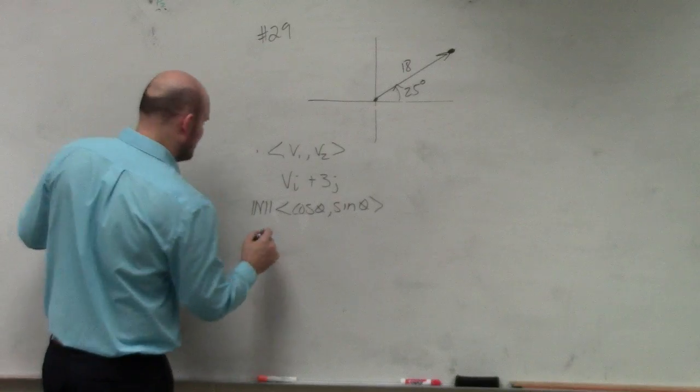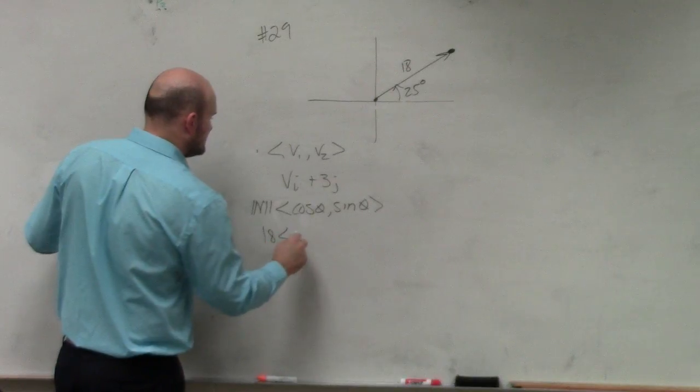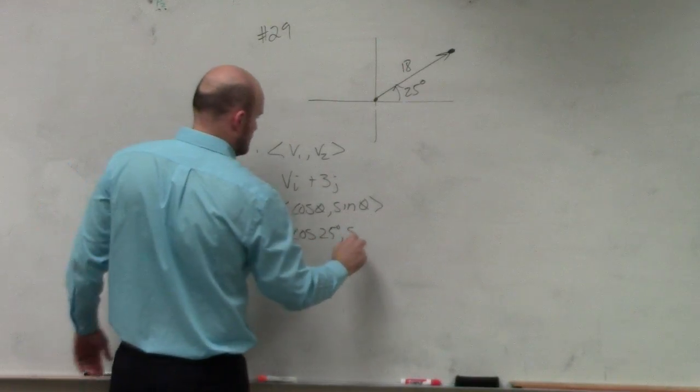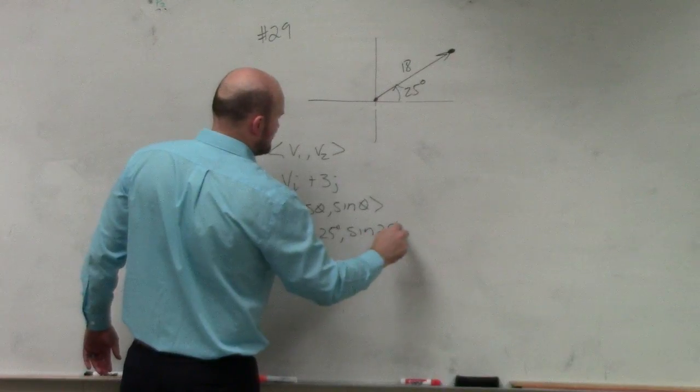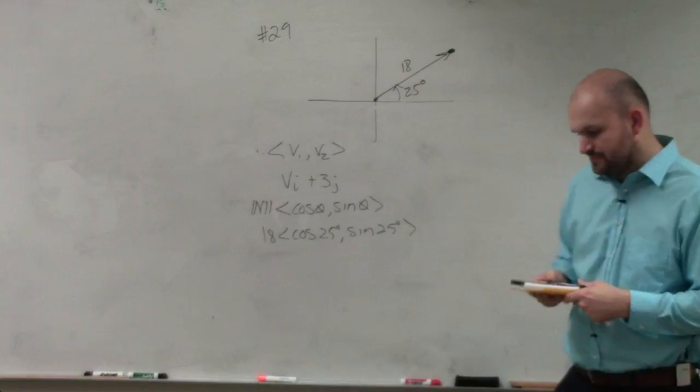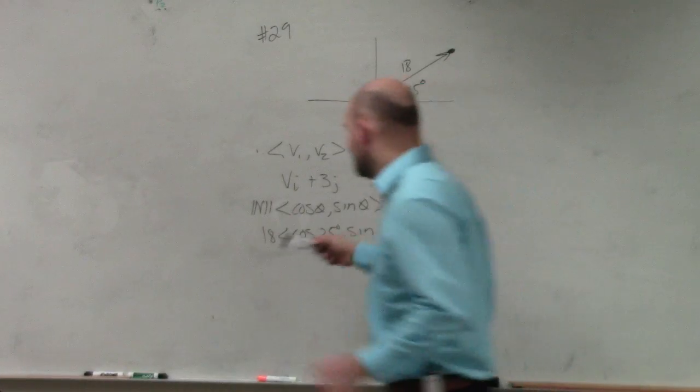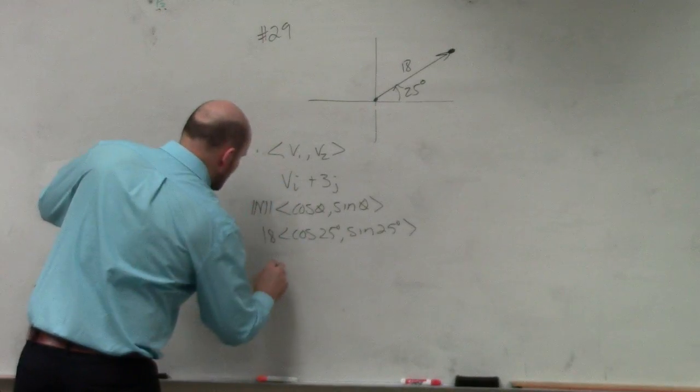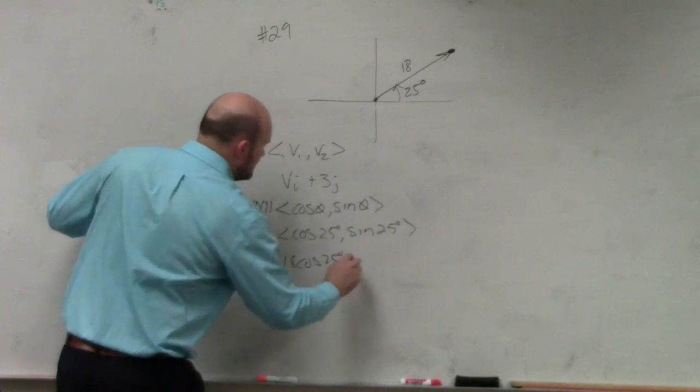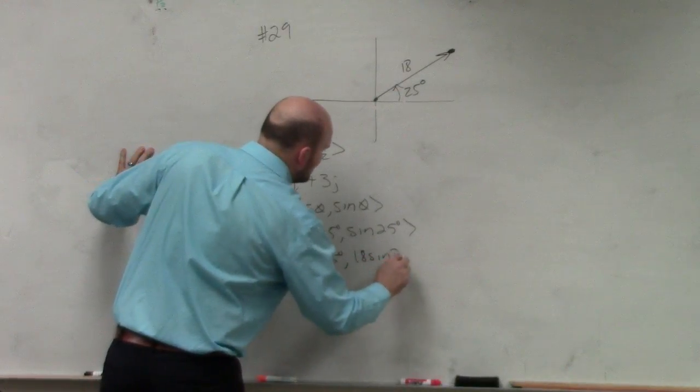So all you have to do for this is 18 times cosine of 25 degrees, comma, sine of 25 degrees. Then it said to simplify your answer. Just remember, this is now a scalar. So it's really 18 times cosine of 25 degrees, comma, 18 times sine of 25 degrees.